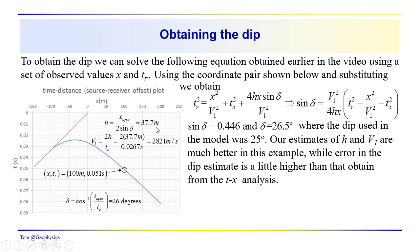We did better here, we got more accurate values for the thickness and the velocity. We're much closer. But the dip using the hyperbolic analysis that we conducted earlier on the last video, we got 26 degrees here, we got 26.5, and the actual dip was 25 degrees. So our estimates of H and V1 are much better. The error in the dip estimate, a little bit higher.